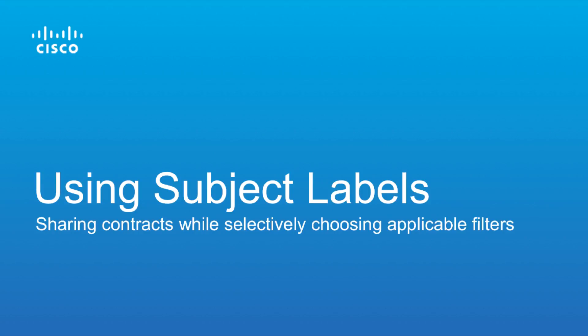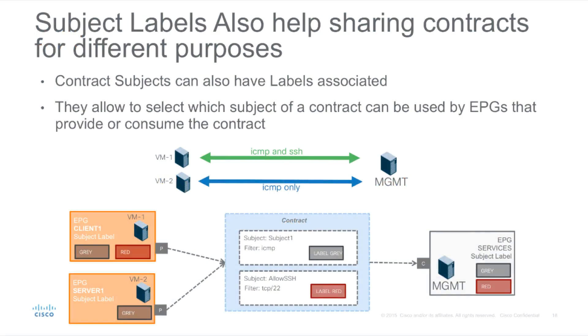In this demo we will be looking at ACI subject labels. This allows us to share contracts while selectively choosing which filters are applicable between different EPGs. Subject labels are therefore also useful when we want to share contracts for different purposes.